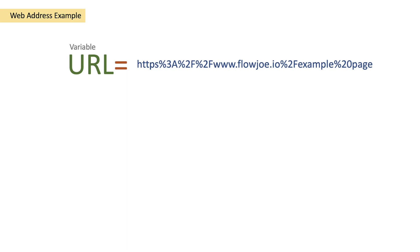Hi and welcome to another video by me, FlowJo. Today we're going to be looking at the decodeURIComponent function in Power Automate. In our example, we have a variable URL which is a string variable.